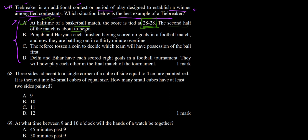The match is at halftime and the second half is still remaining, so we cannot say both teams have the same score overall. They have the same score only in the first half, but we don't know the overall match result. The second half is not a tiebreaker — it's just the pattern of the game. So option A is incorrect.